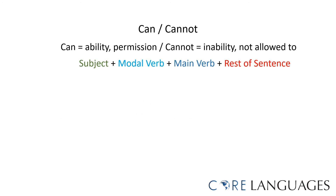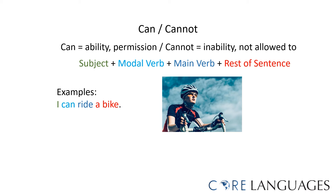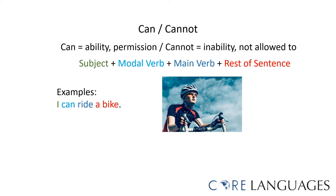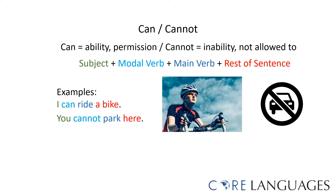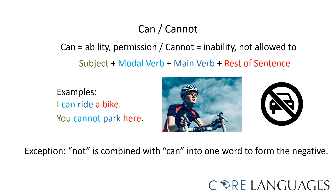The modal verb 'can' is used to express both the ability and the permission to do something. 'Cannot' is used to express the inability, or to say that someone is not allowed to do something. The word order is the same: subject, modal verb, main verb in its base form, and the rest of the sentence. For example, I can ride a bike — this expresses the ability of riding a bike. You cannot park here — this expresses that you are not allowed to park here. Notice that 'not' is attached to 'can', forming one word in the negative.